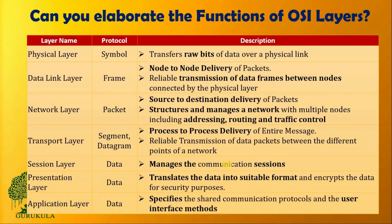The OSI model will have seven layers: the physical layer, data link layer, network layer, transport layer, session layer, presentation layer, and then the application layer. Each and every layer will have their own functionalities.